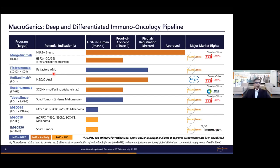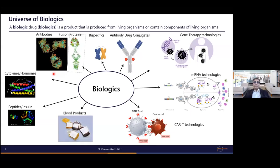I work at Macrogenics, which has a deep and differentiated immuno-oncology pipeline. We develop a number of biologic molecules including antibodies, bispecifics, and antibody drug conjugates (ADCs). We have a number of programs in the pipeline — those in early to late stage are shown here. These molecules are developed with partners throughout the globe. We have an approved product and also a bispecific antibody in late-stage development having gone through PPQ.